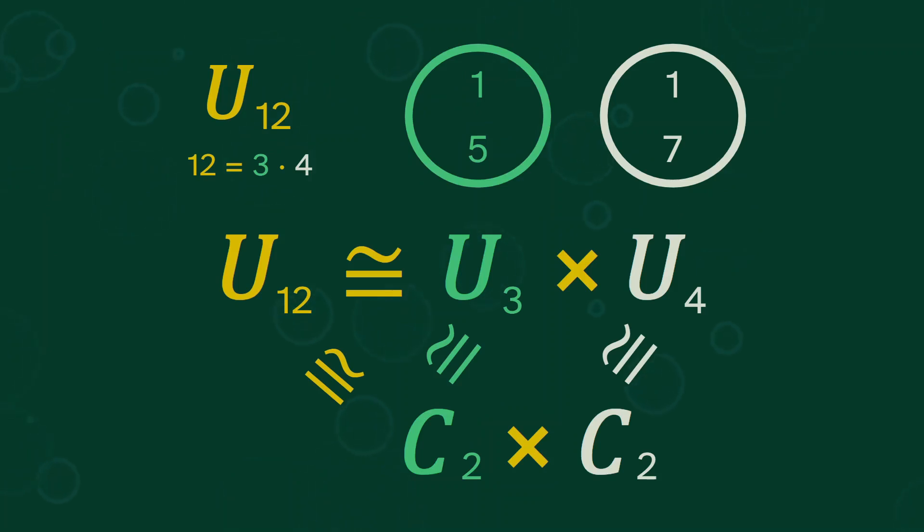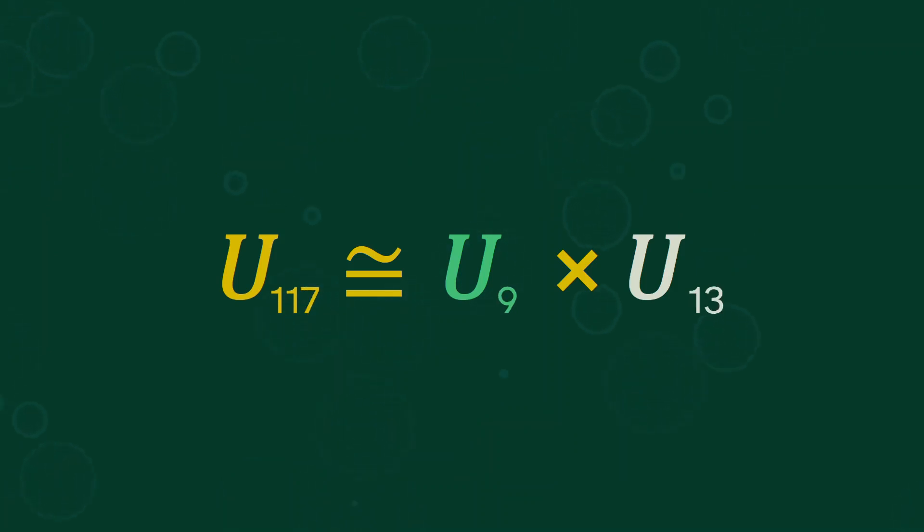And we can do this in general. For example, u117 is the product of u9 and u13, since 9 times 13 is 117. And we saw before that u9 is a 6 cycle and u13 is a 12 cycle, which tells us that u117 is the product of a 6 and 12 cycle.